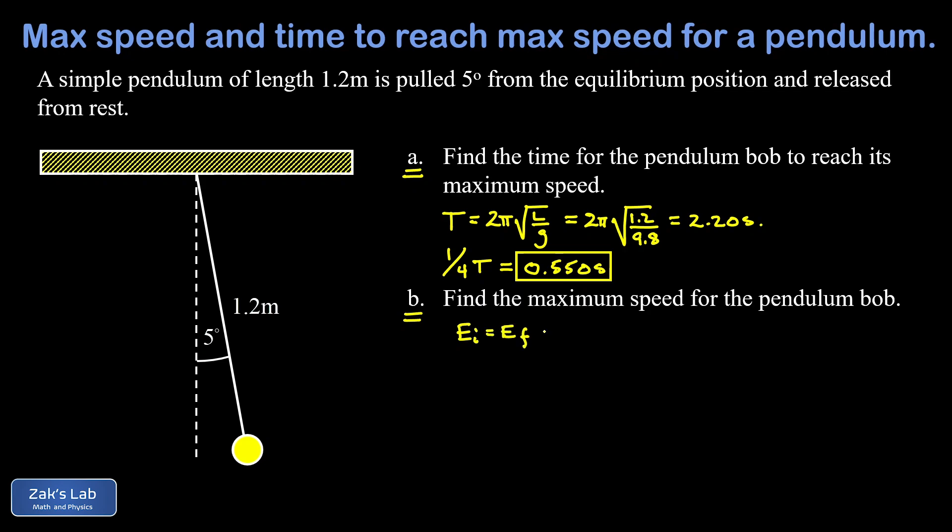And if we put the zero of our y coordinate at the lowest point, then the initial energy is entirely gravitational potential energy, so we can write that as mgy initial. And our final energy is going to be entirely kinetic energy, so I have a 1/2 m v final squared.